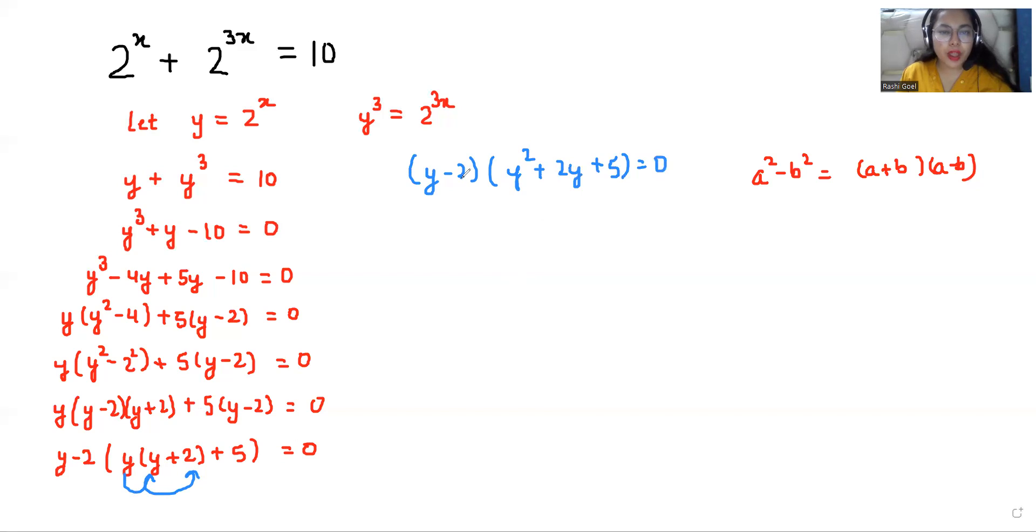Now we have two roots of y. First is y - 2 from here. Case 1: y - 2 = 0. The value of y is 2. If I replace this y = 2^x, that means 2 = 2^x, that means 2^1 = 2^x. So the value of x is 1.